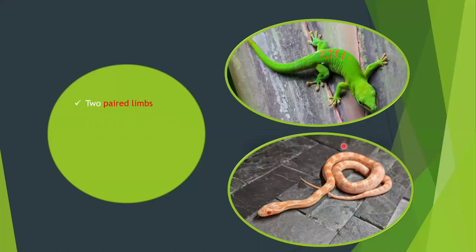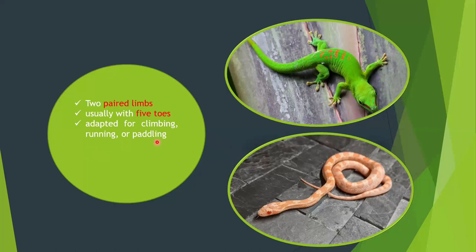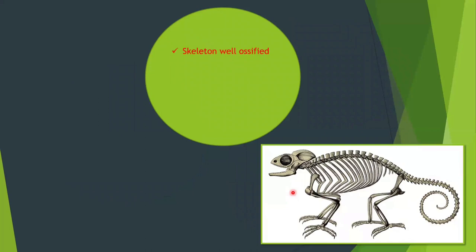Reptiles contain two paired limbs, usually with five toes, adapted for climbing, running, or paddling. Each limb has five toes as seen in the diagram. The limbs are vestigial or absent in snakes and some lizards — as visible in the diagram, snakes have no limbs.